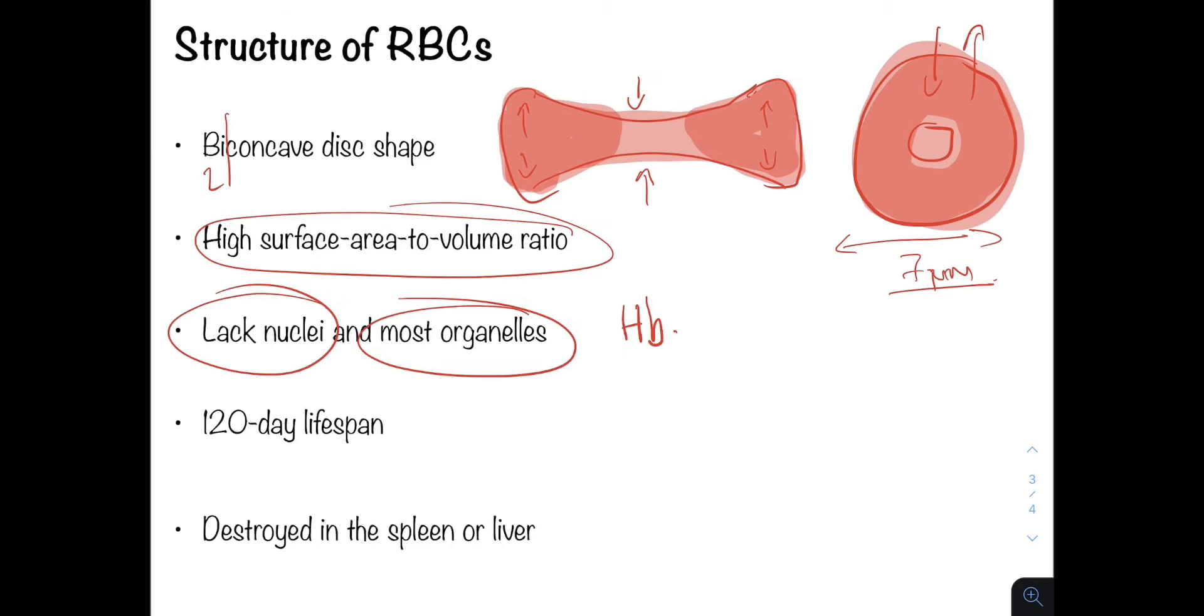The fact that they lack nuclei and most organelles means that cells cannot proliferate, they can't duplicate, they can't give off offspring, they are destined to be single, they can't increase their numbers by themselves, and they cannot repair. If for some reason the cells are damaged, for example during specific pathologies or the use of drugs, or any other circumstance that damages the integrity of the red blood cell, the red blood cell lacks the machinery to repair itself, so they are subsequently destroyed in the liver or spleen.